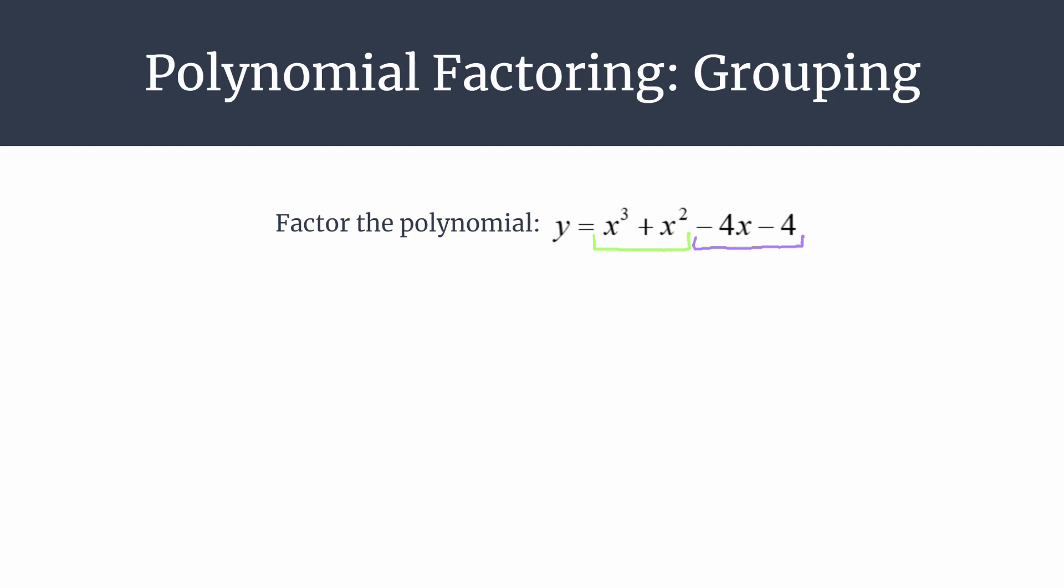Now we want to find a greatest common factor for that group, or a GCF, and we can see that x squared would be the greatest common factor. Pull that out showing it in green, and then note what you're left with in parentheses. When we pulled out x squared from x cubed we were left with an x, and when we pulled out x squared from positive x squared we're left with one.